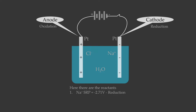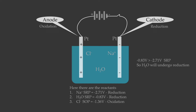The standard reduction potential for sodium ions is −2.71 V and the standard reduction potential for water is −0.83 V. To select the ion or compound that will undergo reduction, we compare these standard reduction potential values. Since −0.83 V is greater than −2.71 V, the ion with the larger standard reduction potential will preferentially undergo reduction. In this case, water has the larger value of −0.83 V, so water will undergo reduction at the cathode.